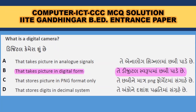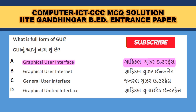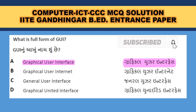What is a digital camera? It takes pictures in digital form — the camera that converts photos into digital format, so B is the correct answer. What is the full form of GUI? That is Graphical User Interface. The Windows operating system that we use with mouse and keyboard is a Graphical User Interface, which uses icons and menus, so A is the correct answer.